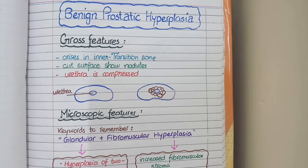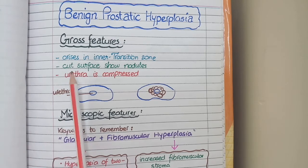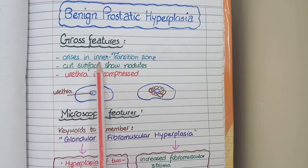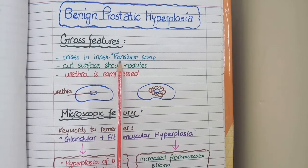In this video, we will study the pathological features of benign prostatic hyperplasia. Firstly, benign prostatic hyperplasia arises in the inner transitional zone of the prostate.